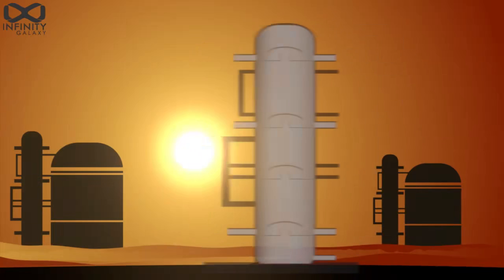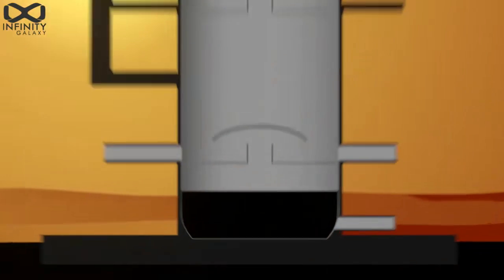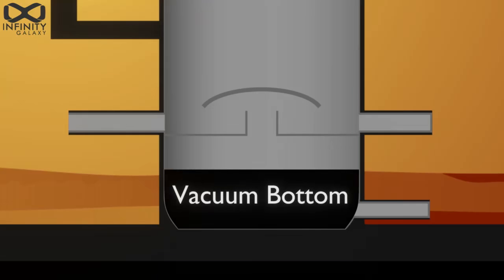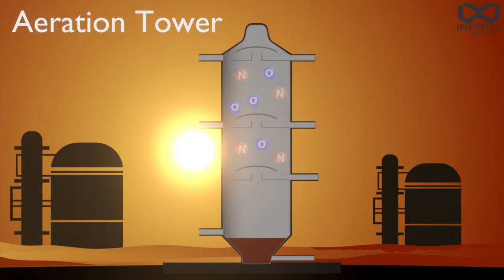In refineries, the crude oil trends into vacuum bottom in the distillation tower. Vacuum bottom is the raw material of bitumen production. By entering the aeration tower, the vacuum bottom is exposed to oxygen and nitrogen and loses its hydrogen as much as possible and gets heavier. The final outcome of this process is different types of penetration grade bitumen.